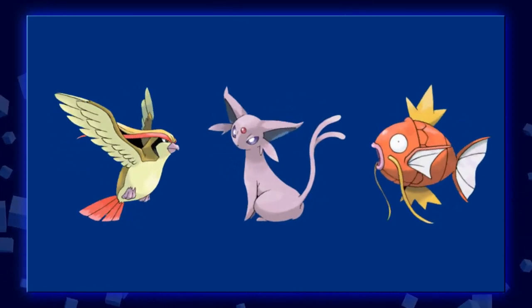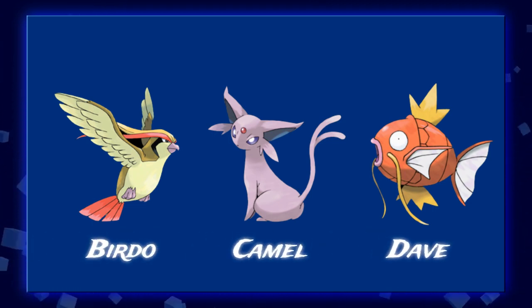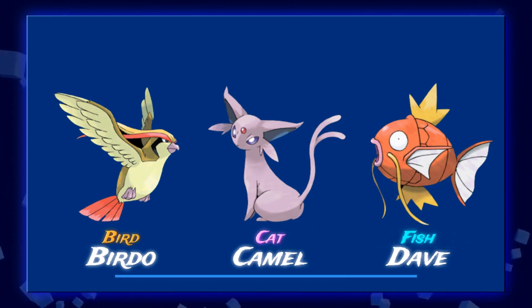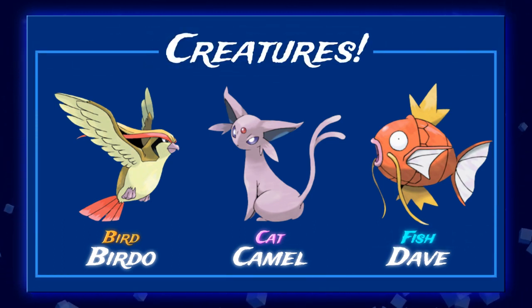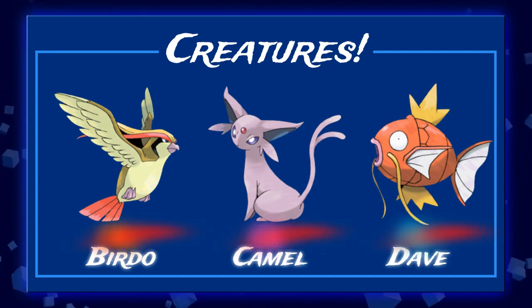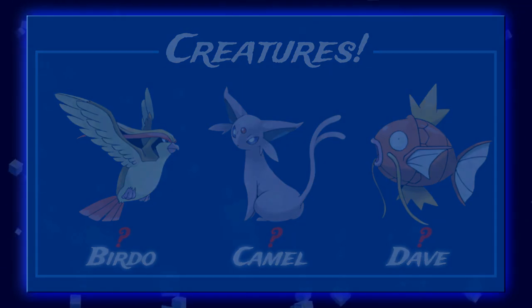Welcome to the inheritance tutorial. Let me introduce you to three friends: Birdo, Camel, and Dave — a bird, a cat, and a fish. All of them are what we'll call creatures. Our goal today is to make them do stuff with general commands — basically without even knowing which one I'm talking to, I want to ask them to move, talk, or jump.